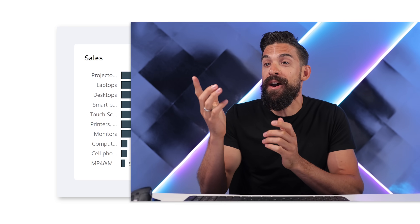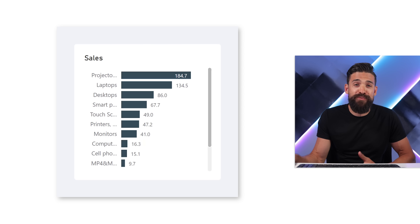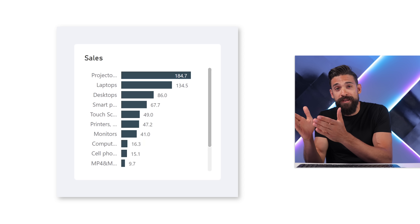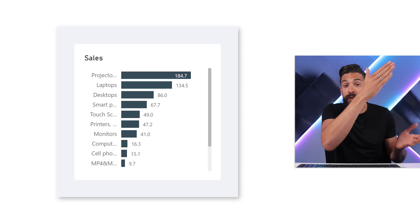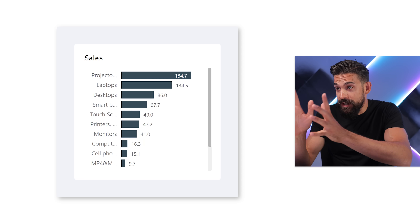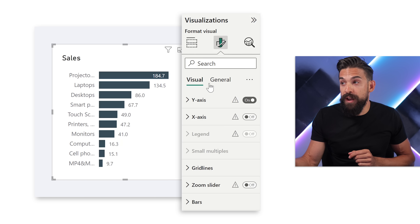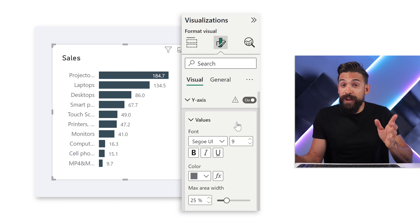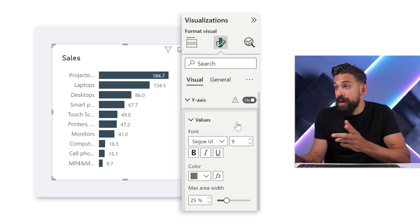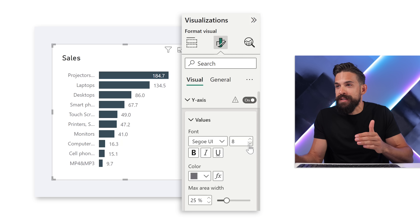I already have a bar chart set up and you can see the problem straight away — we don't have a lot of space for the labels on the y-axis. Option one would be to select the chart, go to formatting options, go to the y-axis, and decrease the font size. Eight is the smallest and it already starts to look a little bit better.